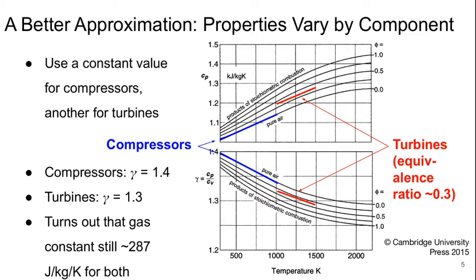So we'll use a constant value for compressors and a different constant value for turbines. In compressors the gas is pure air, so we have gamma of 1.4. In turbines where the equivalence ratio is typically about 3, for the combustion products the gamma at the appropriate temperature range would normally be about 1.3.